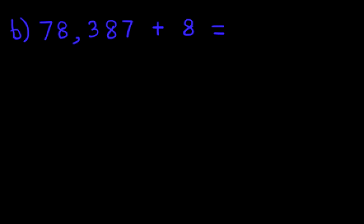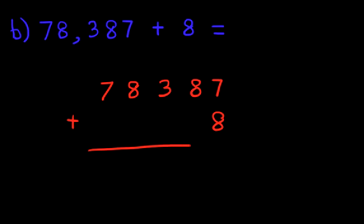So let's rewrite the question. 78,387 plus 8. And note how the 8 goes below the number 7. Because both of them are units.